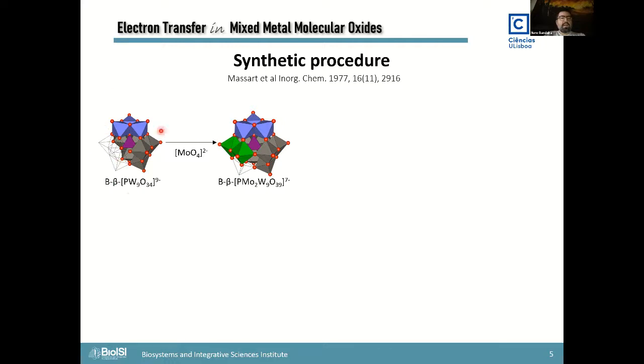So they start with a beta type lacunary structure. This is commercially available and it's stable. And you add two molybdates moieties in accurate solution. You end up with this structure right here, but the beta isomer is unstable. So it quickly rearranges and turns back to a beta alpha type isomer. And this is the composition of the structure that Huizhang Liu obtained.